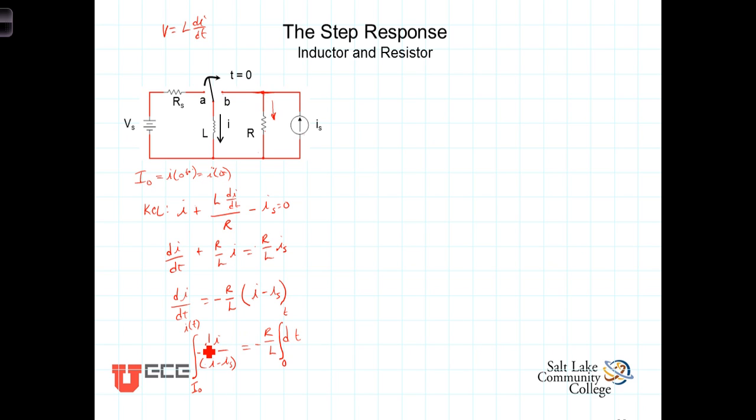Once again, we've got dI over I, that's I minus Is, but that doesn't change the integration. So when we integrate both sides, we have then the natural log of (I minus Is), evaluated from I naught to I(t), is equal to negative R over L times t, evaluated from 0 to t.